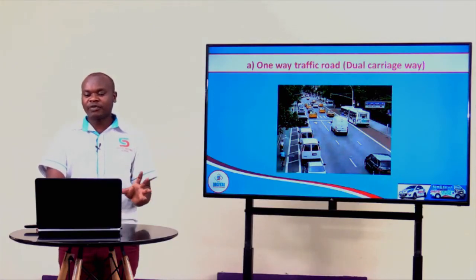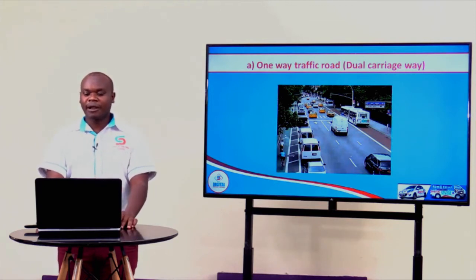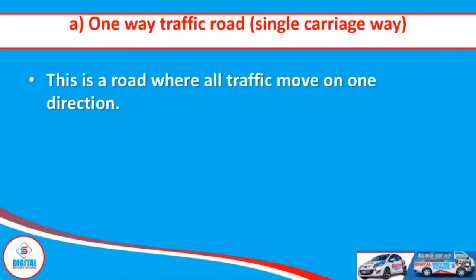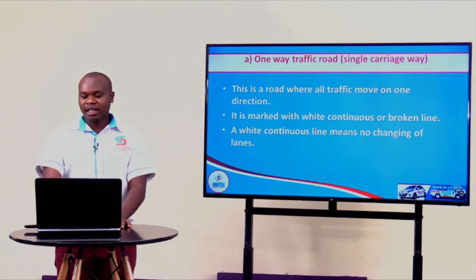In our next session we are going to look at each feature individually. We start with a one-way traffic road, also known as a dual carriageway. As you can see on our screen, we have how a one-way traffic road looks like. This is a road where all traffic moves in one direction. This road is divided using white continuous or white broken lines.